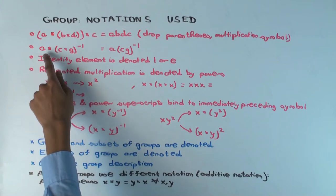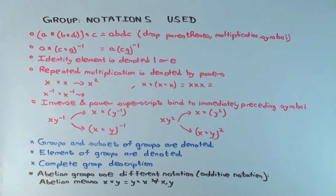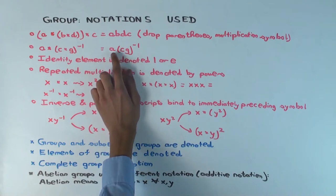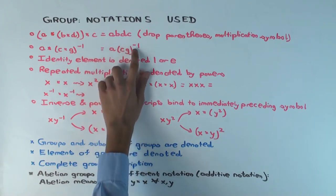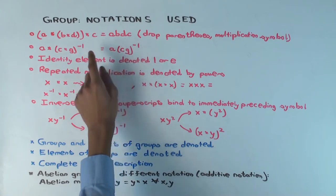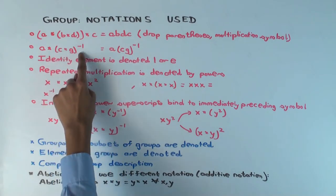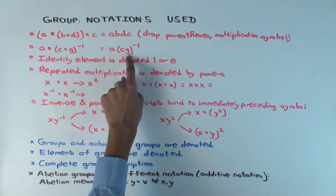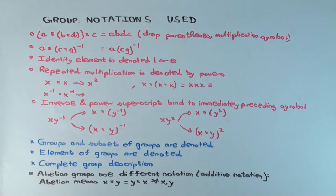The next thing is that for inverses, you basically just put an inverse superscript, and you just parenthesize whatever you are inverting. So for this one, A star C star G inverse, you just write as A times CG inverse.